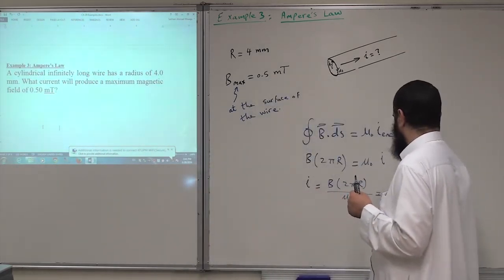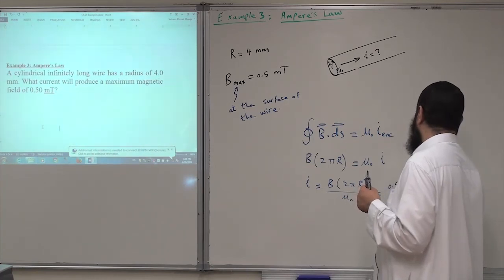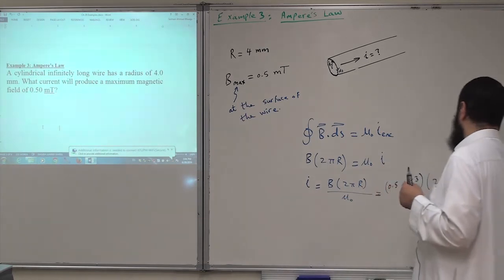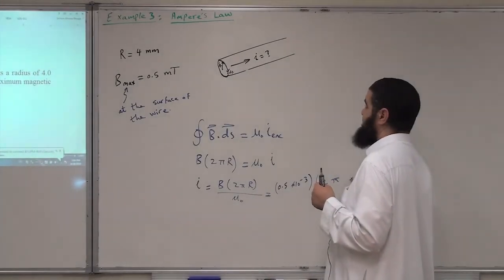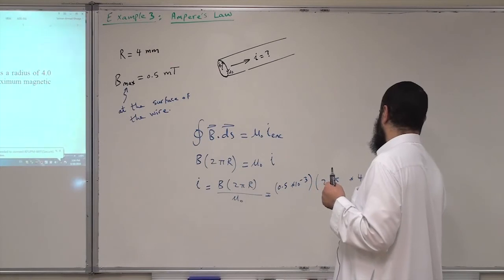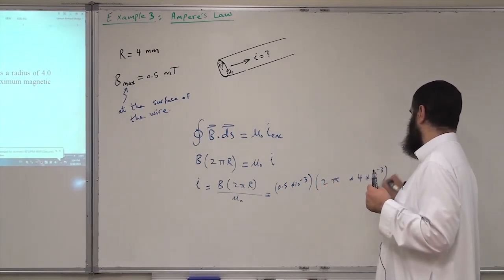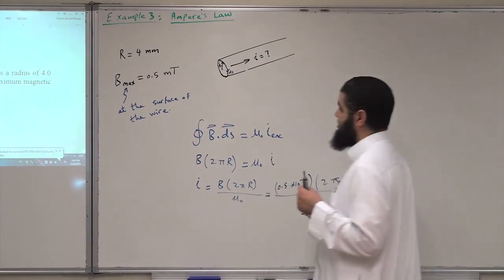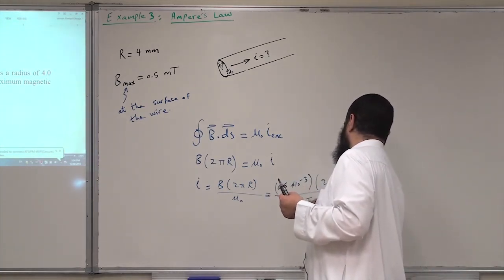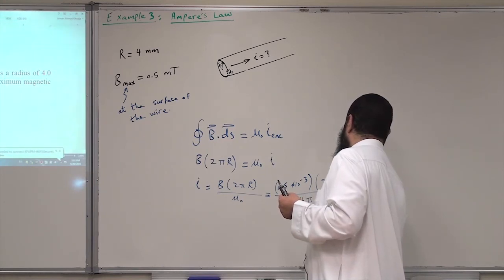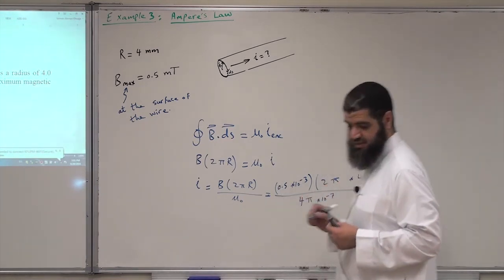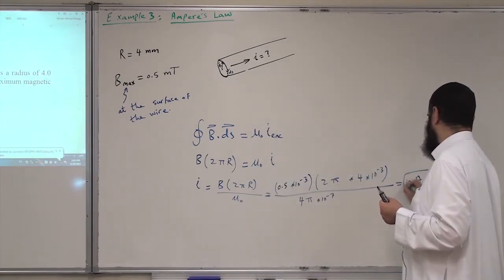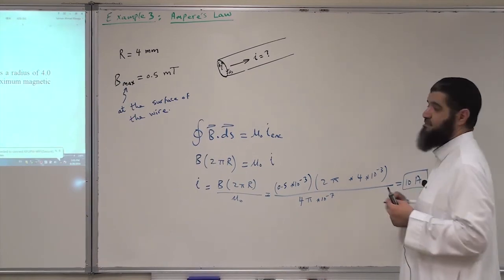Plugging in: B_max = 0.5 × 10⁻³ T, radius R = 4 × 10⁻³ m, and μ₀ = 4π × 10⁻⁷. If you do these calculations, you will get the current to be 10 Amperes.